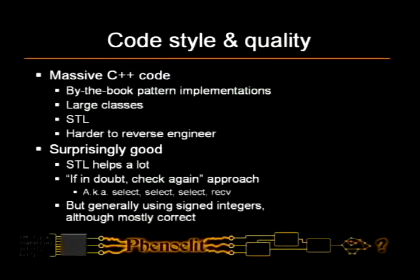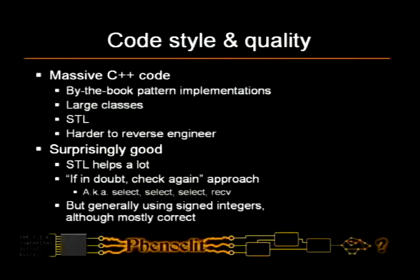Talking about the code style: it is C++ by-the-book pattern implementation, fairly large classes, STL heavily used, pretty hard to reverse engineer — and it turns out it's surprisingly good code. STL helps a lot because if you have string classes, you don't do memcopy everything back and forth. The coding style seems to be: if in doubt, let's check. The receiving function, for example, does a select on a socket to see if there's a byte to receive, then calls a function which does another select, which calls another function doing another select, which then calls a function that actually receives a byte. This defensive coding style is inherited throughout the entire system, and it is good.